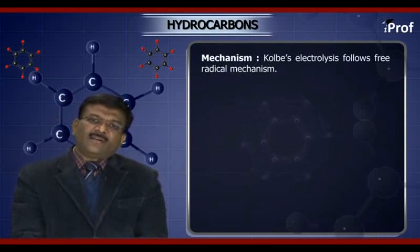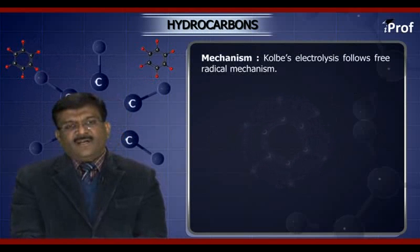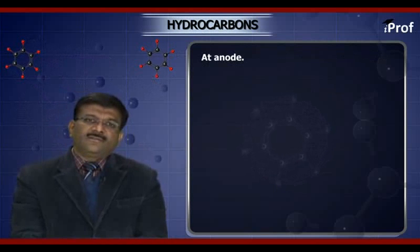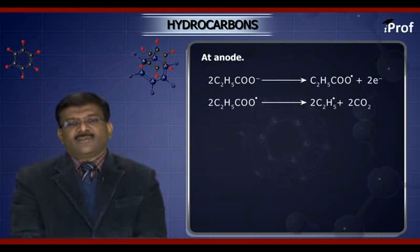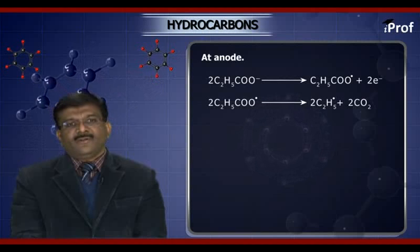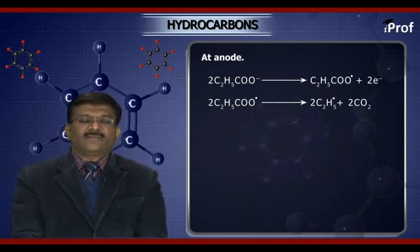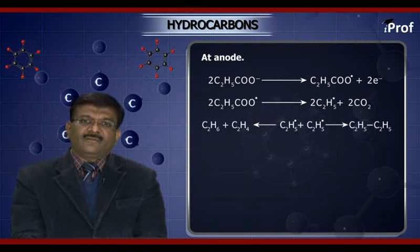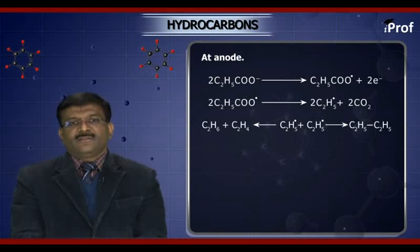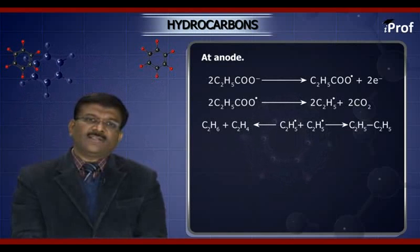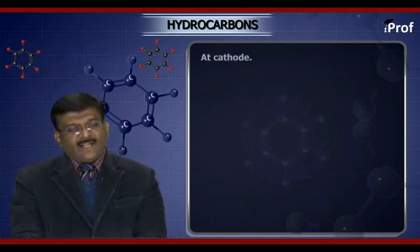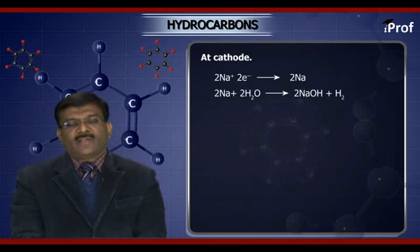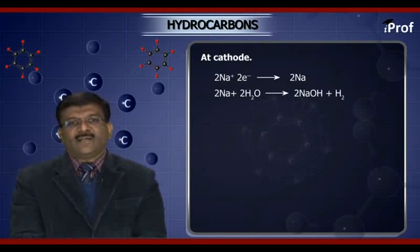Mechanism: Kolbe electrolysis follows a free radical mechanism. At the anode, the carboxylate ion (RCOO⁻Na⁺) loses an electron to give the RCOO radical, which then liberates carbon dioxide to give the alkyl radical R•. Two alkyl radicals combine together to form the alkane R–R. At the cathode, the sodium ion gains electrons to give sodium metal, which then reacts with water to give sodium hydroxide and hydrogen gas.